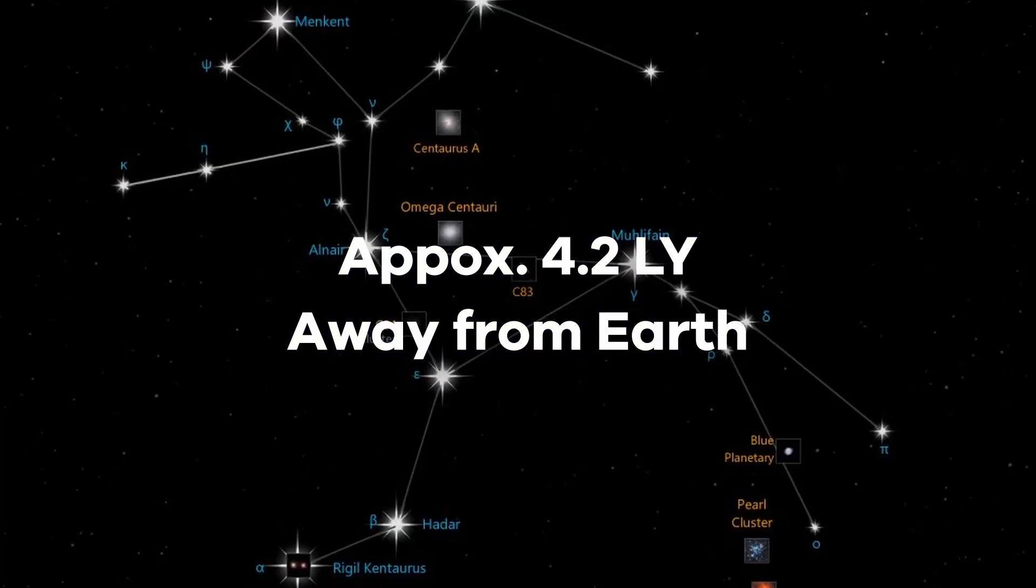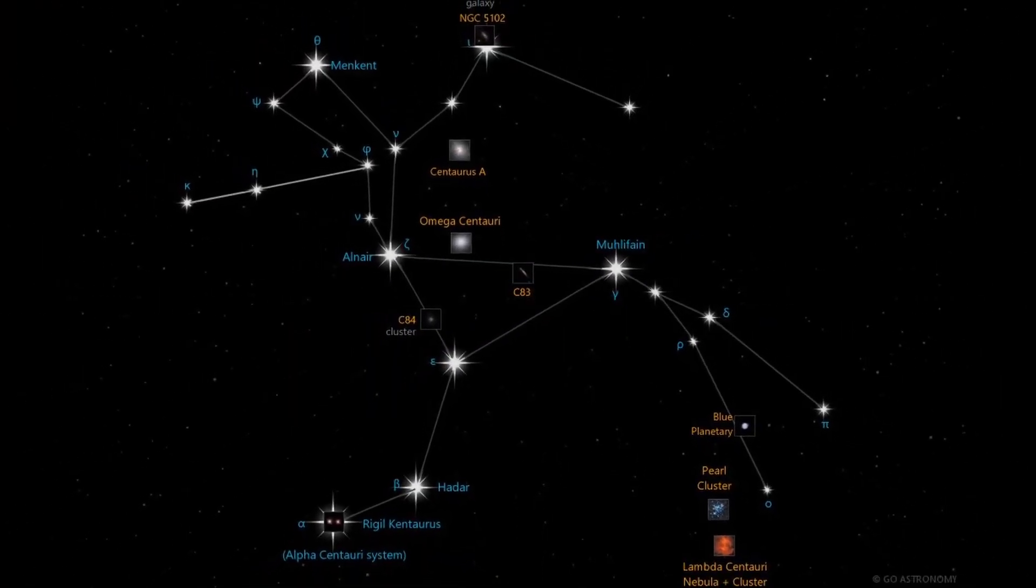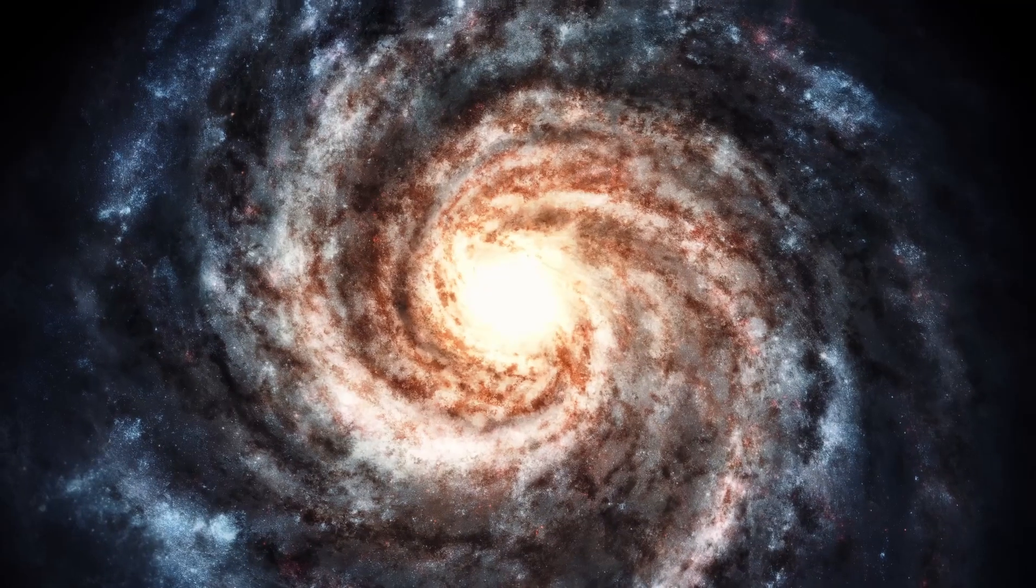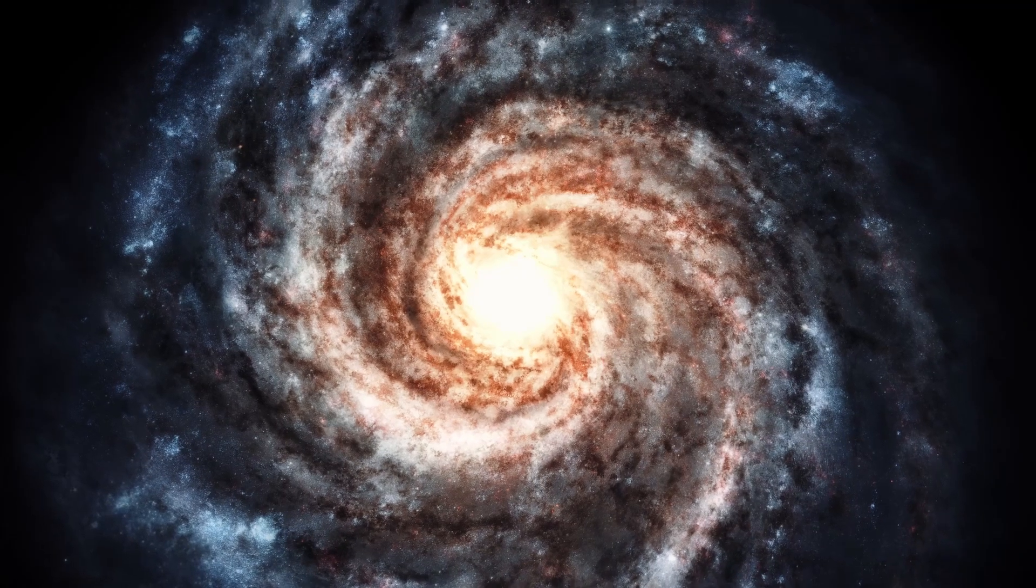Proxima b is estimated to be approximately 4.2 light-years away from Earth, located in the constellation Centaurus. Alongside the currently disputed Proxima c and Proxima d, it is one of the closest known exoplanets to our solar system.